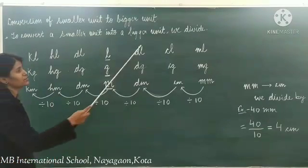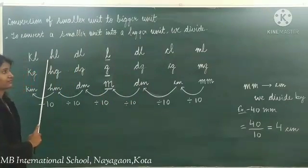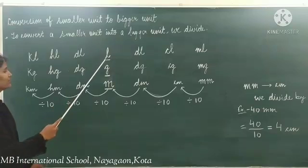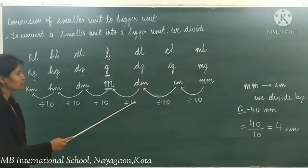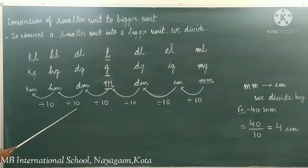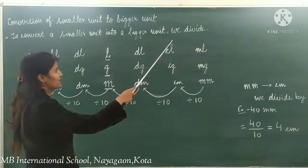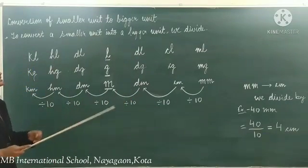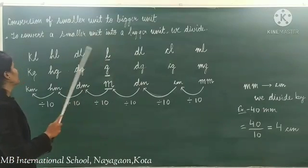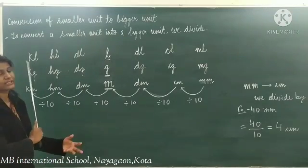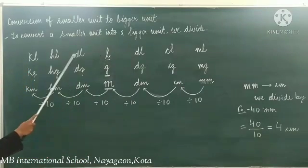To convert centiliter into hectoliter: count the steps — 1, 2, 3, and 4 — so divide by 10,000. To convert liter into kiloliter, there are three steps, so divide by 1000.